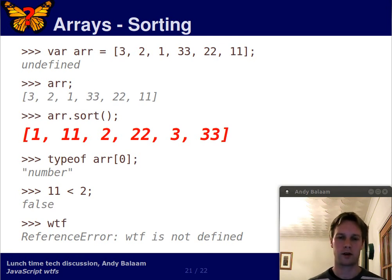So, fortunately, you can pass in a function to sort, which is the comparison function. So, if you want to live in a sane world, you can pass in a function which compares integers, if that's what they are, and tells you, yes, 2 is smaller than 11.